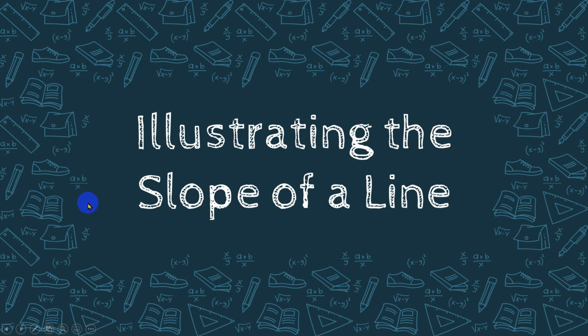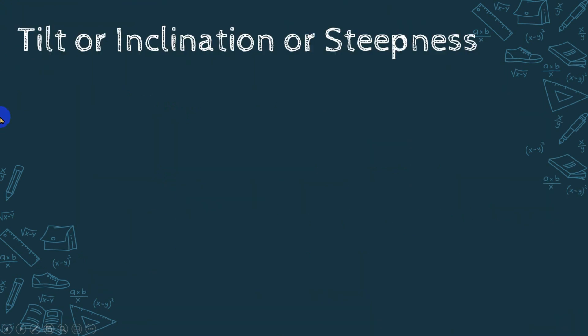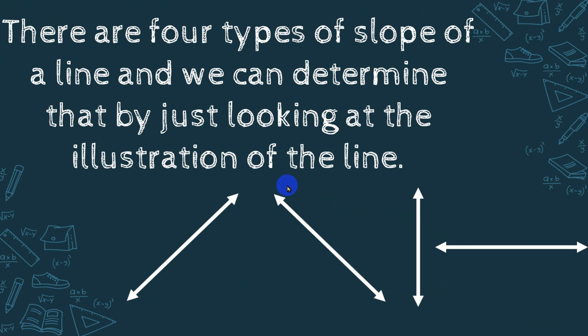So how are we going to illustrate it? Illustrating the slope of a line: we have lines upward from left to right, downward from left to right, vertical lines, and horizontal lines. This shows tilt, inclination, or steepness. But let us give a deeper meaning about the slope.